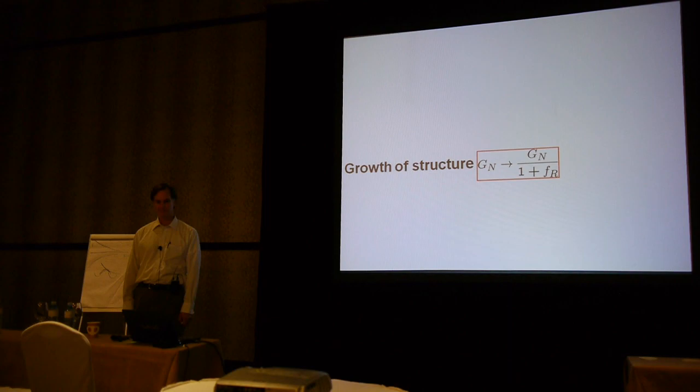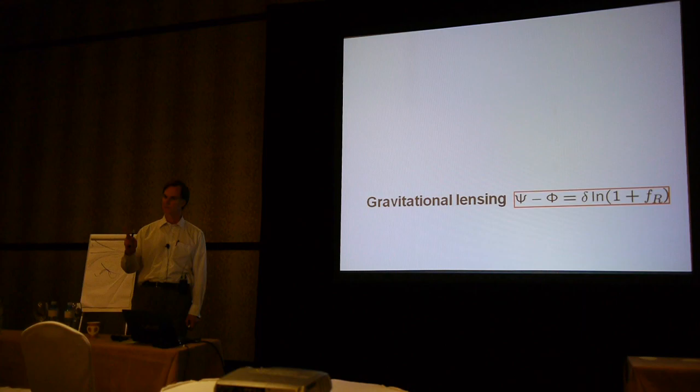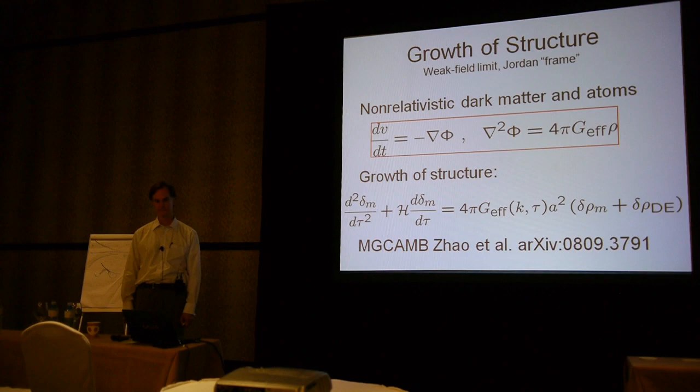These departures will have consequences for structure formation, gravitational lensing, and the CMB. What about the first one—growth of structure, which is governed by the Poisson equation? And what about the second—gravitational lensing? Growth of structure and gravitational lensing are going to be the keys to testing gravitation.